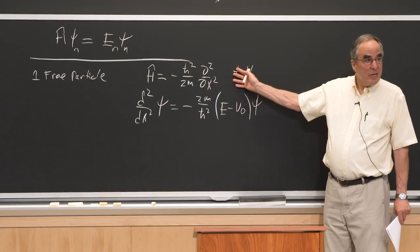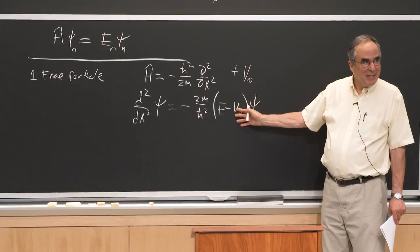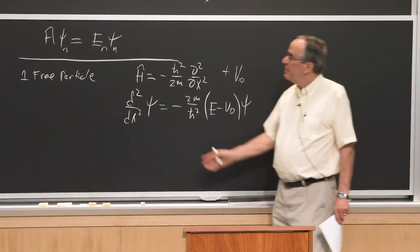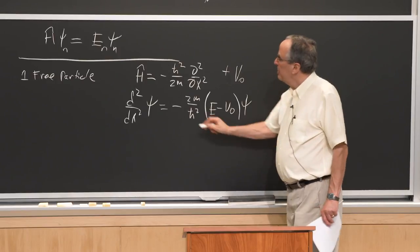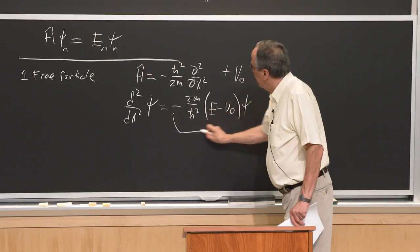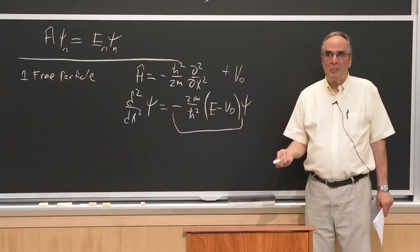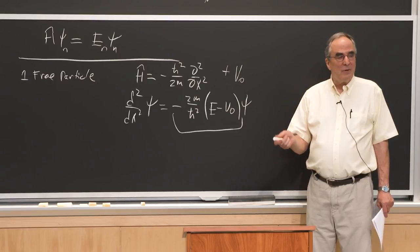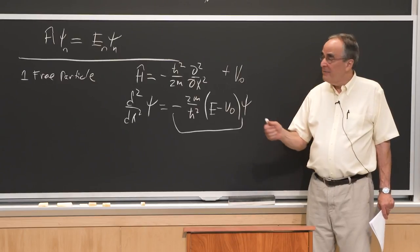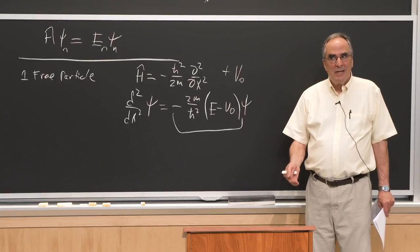We write the Schrödinger equation and rearrange it into an easy form to solve. The second derivative of psi equals minus 2m over ℏ² times (E minus V₀) times psi. So the second derivative of some function equals some constant times that function — we've seen that problem before. It makes a big difference whether that constant is positive or negative.